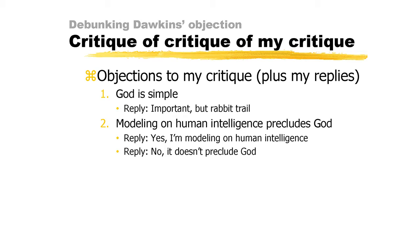Second objection: one might object that in my examples in which we clearly detect design — archaeology, cryptography, forensic science, Scrabble — we model the detectable design from unknown intelligent causes, i.e., us. But it's not reasonable to do this sort of modeling with any kind of supernatural intelligence such as God, who is too different from us. In reply, in the examples of archaeology, cryptology, forensic science, and Scrabble, yes, we are modeling the design inference on known intelligent causes which happen to be us.